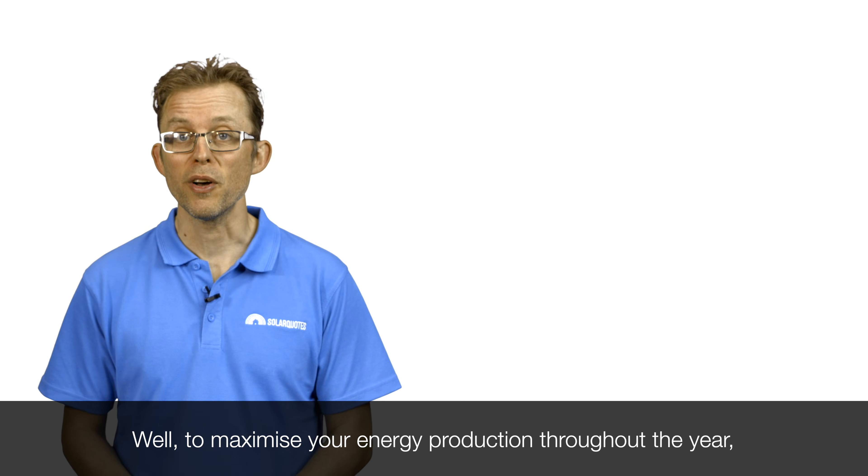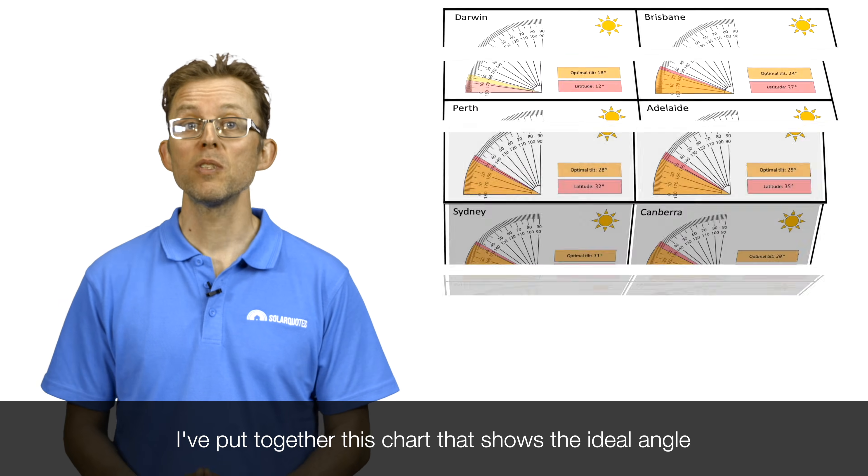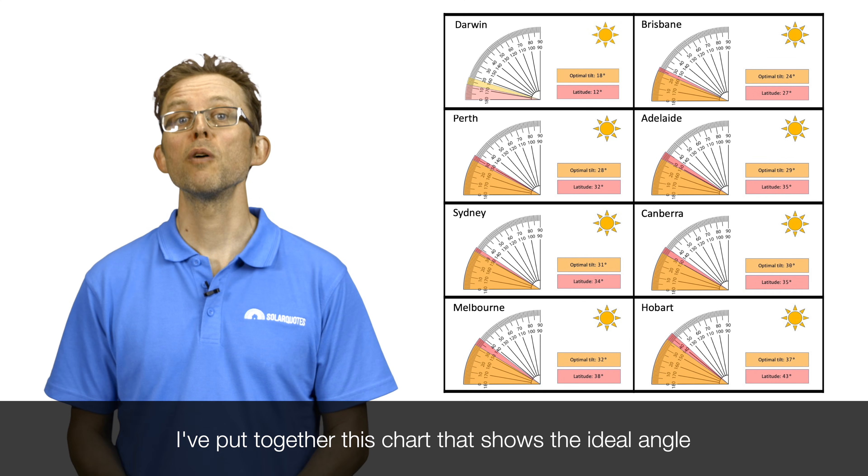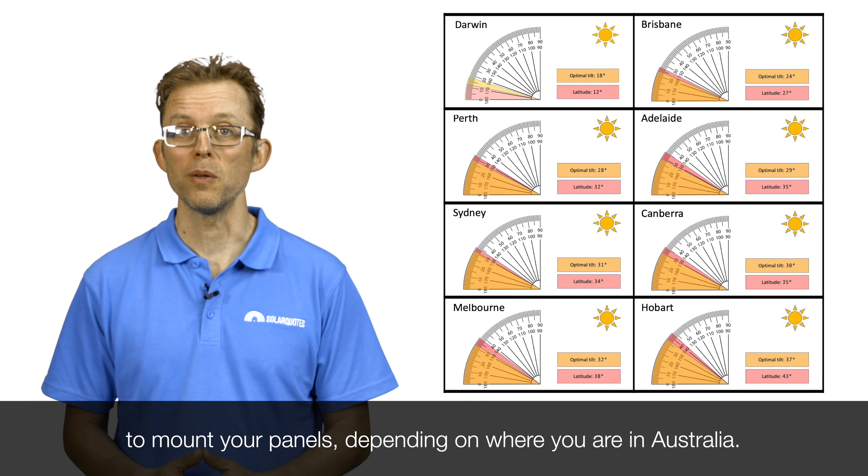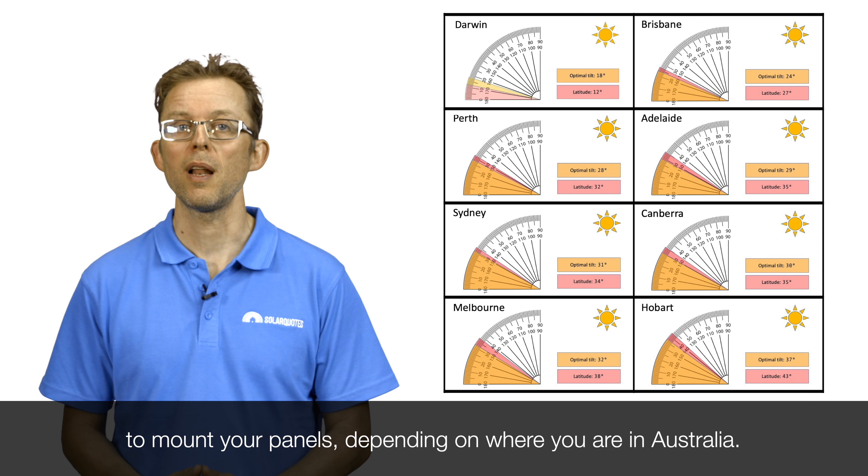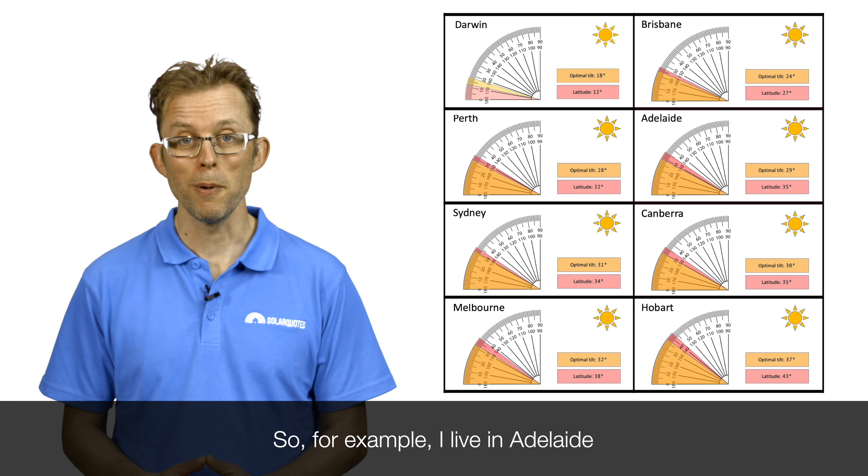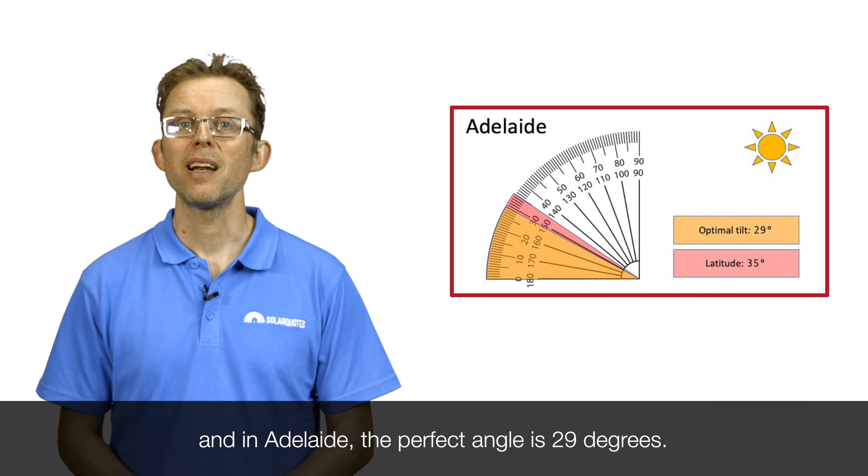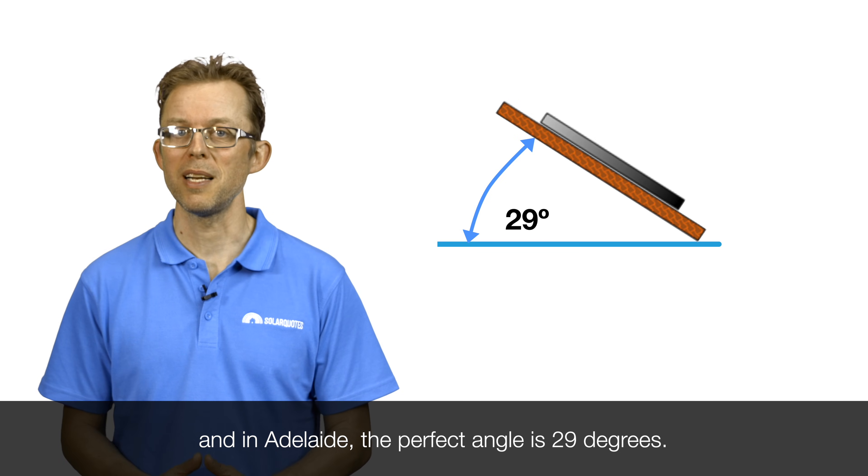To maximize your energy production throughout the year, I've put together this chart that shows the ideal angle to mount your panels, depending on where you are in Australia. So, for example, I live in Adelaide, and in Adelaide, the perfect angle is 29 degrees.